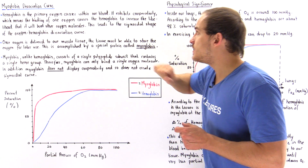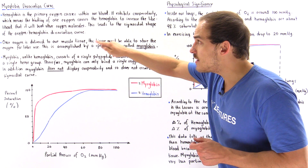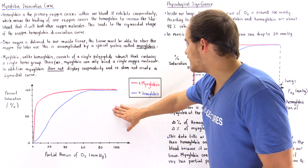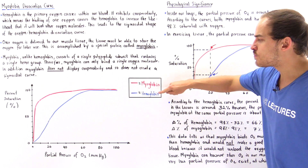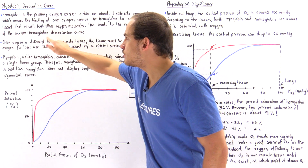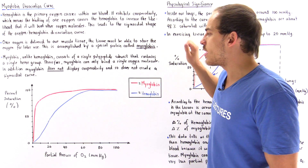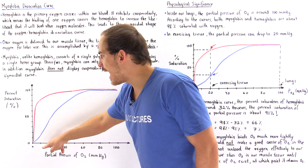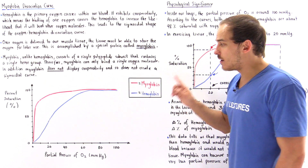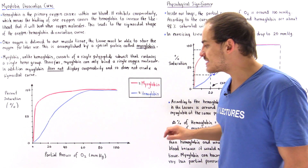Now this leads to the sigmoidal shape — the S-shape — of the oxygen-hemoglobin dissociation curve that can be seen in the following diagram. The blue curve is the oxygen-hemoglobin dissociation curve, the S-shaped sigmoidal curve.